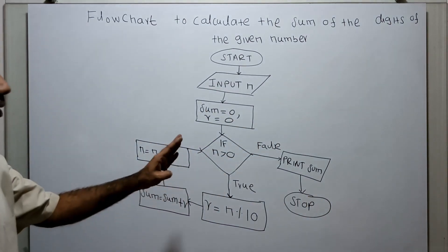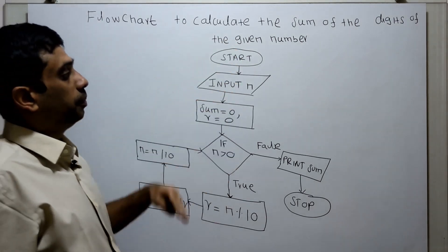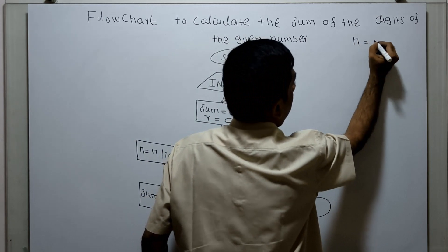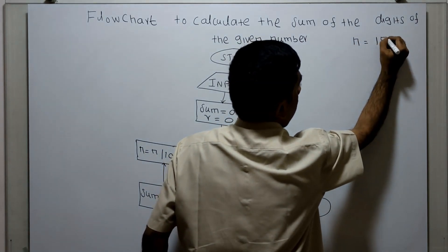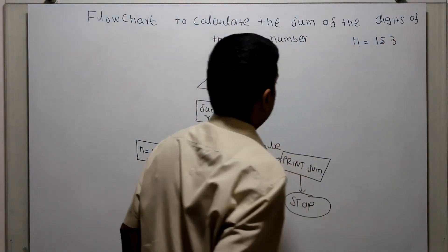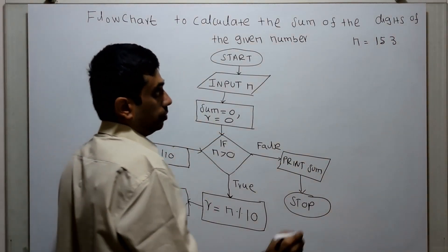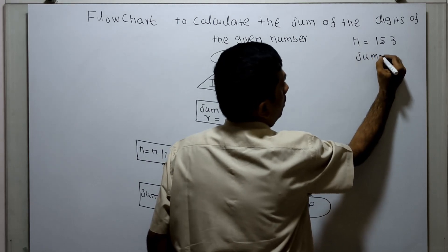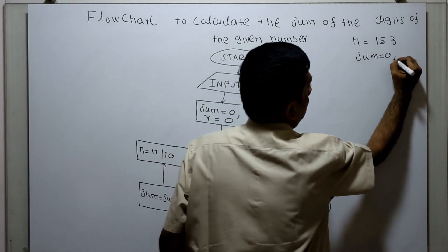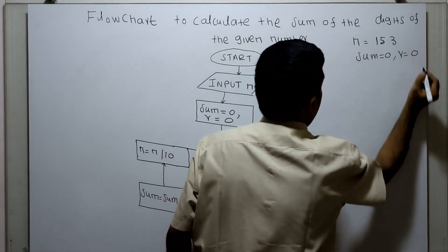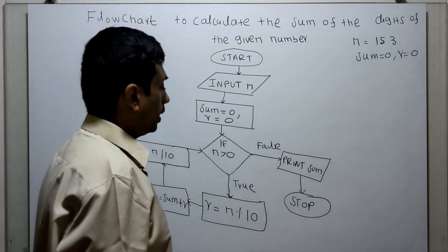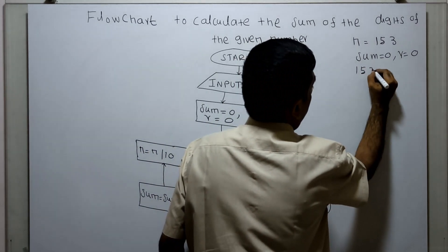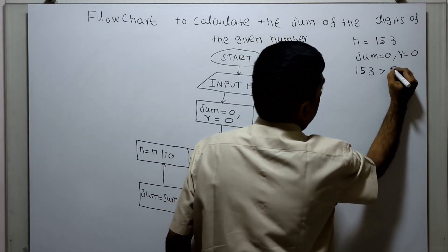We will see how it works with an example. Start, input n — I am giving n equal to 153. Sum equal to 0, r equal to 0. Now we check: 153 greater than 0.